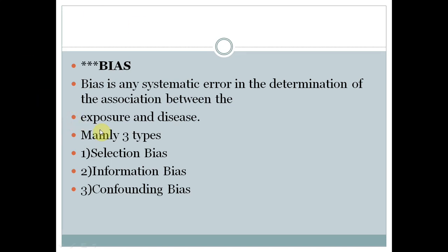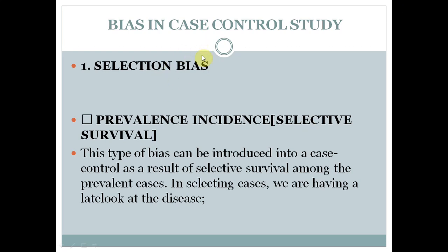There are three common types of bias: the first is selection bias, the second is information bias, and the third is confounding bias. Selection bias arises when selecting participants into case/control or cohort groups. Information bias arises during data collection. Confounding bias involves a third variable.